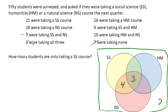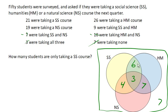Ten were taking a humanities and a natural science class, of which three are taking all three, which leaves seven for that part of the set. Then there were nine taking social science and humanities, three of which are taking all three, which leaves six for that portion of the set.